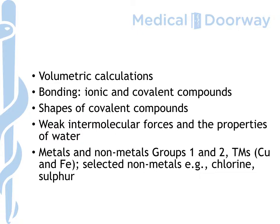We're going to look at weak intermolecular forces and the anomalous properties of water. Then we're going to turn to metals and nonmetals — in particular groups one and two — and also some transition element chemistry. We'll look at some nonmetals too: chlorine and sulfur. Sulfur has largely been omitted from modern A-level syllabuses, so we'll just recap the allotropes and also some important reactions of sulfur.